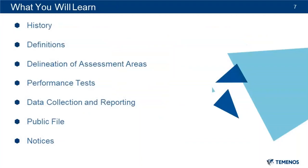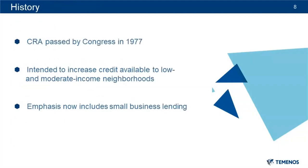Thank you, Rita. Thank all of you for joining us today as we consider the following components of CRA. We'll look at a brief history, go over some definitions, the delineation of assessment areas, and discuss various performance tests for various size institutions. We'll look at data collection and reporting, the public file, and notices. CRA is a community effort. A successful program involves not only your CRA officer, but also the board, senior lenders, marketing, retail, and commercial departments. It's important to ensure that CRA is woven into the fabric of the institution's overall strategic planning. You need to establish and communicate your goals for CRA performance, because without a formal CRA program, you're throwing darts blindfolded.